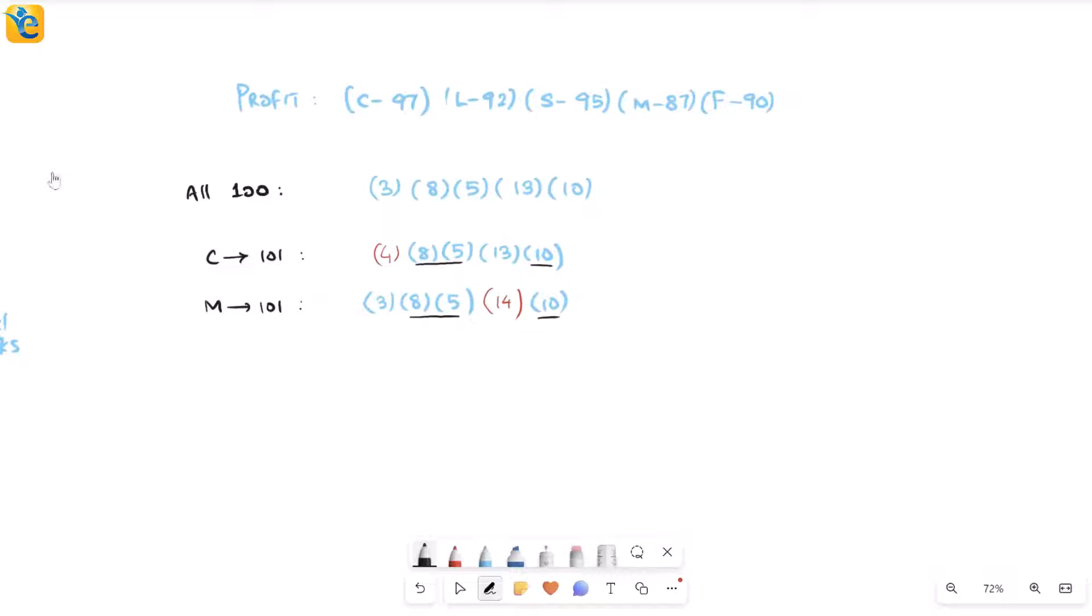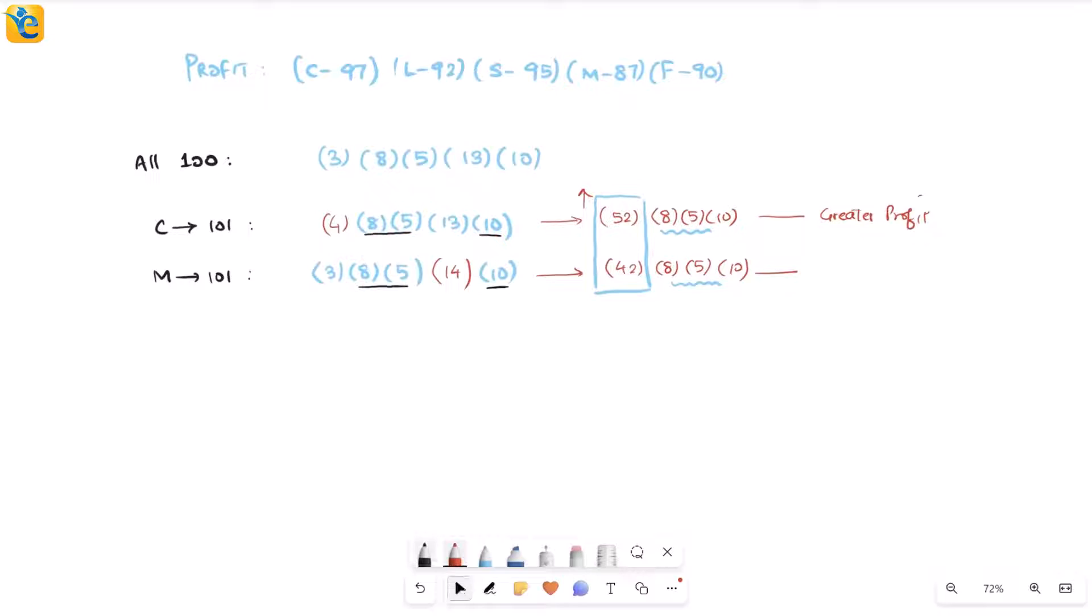Notice here that 8, 5, 10 are common between these two changes also. So essentially, if I combine it, 4 times 13 is 52, and I have 52, 8, 5, 10. While this one here, if I combine the 3 and 14, that's 42, and then I have 8, 5, and 10. If I'm trying to compare the products, obviously the 8, 5, 10 are not going to make an impact. It's the 52 and the 42 which will decide which one increases more. Obviously, because my 52 is a greater number, I am sure that this is a greater profit compared to what I have here with M. So if I have the result for my extremes, then I can conclude some things here.